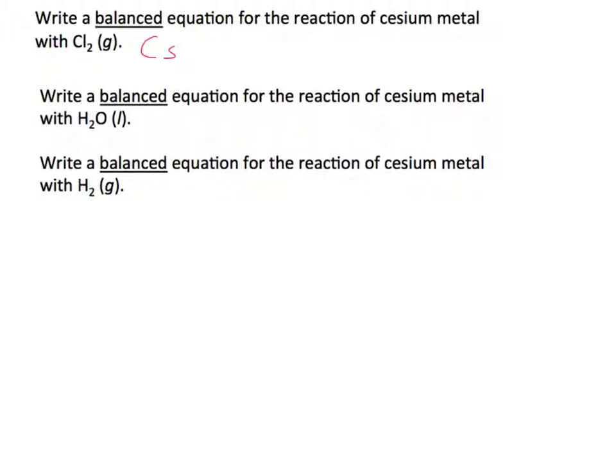So all we have is cesium, which is a solid, reacting with chloride, which is a diatomic molecule, right, and it's a gas. And so we just form CsCl2, which is going to be a solid. If we balance this, we put a 2 in front there and a 2 here.